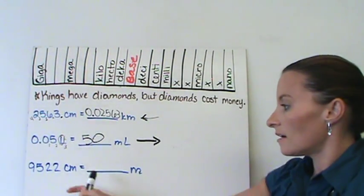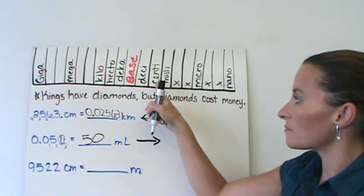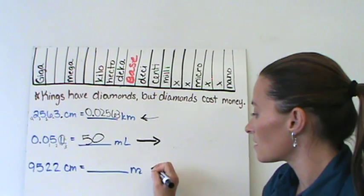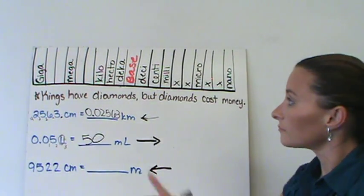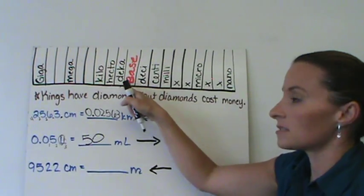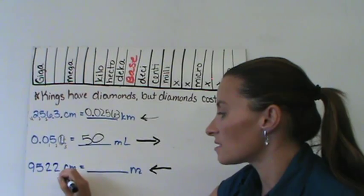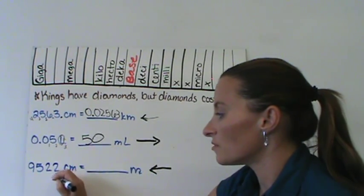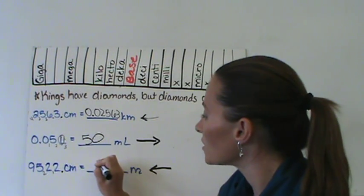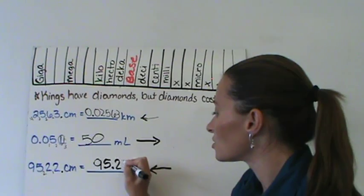For the final one, if I'm moving from centi to meters, I'm going from centi to my base. I'm going to move my decimal place to the left, going 2 places - centi to deci, deci to base. If my decimal place is here at the end, I'm going to move it 1, 2. And my number now becomes 95.22 meters.